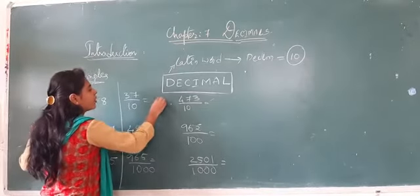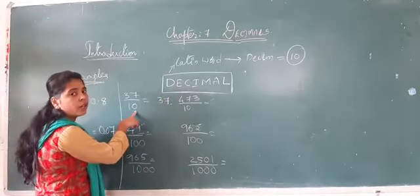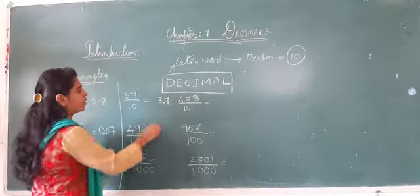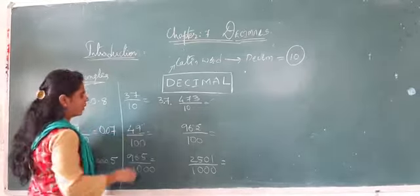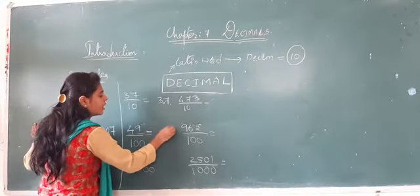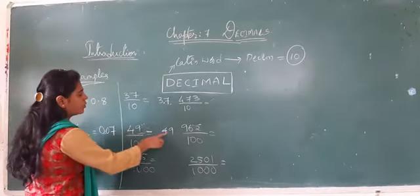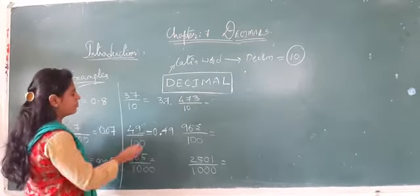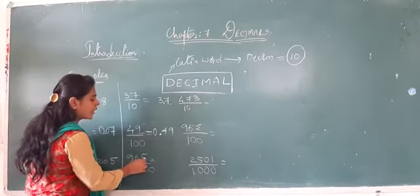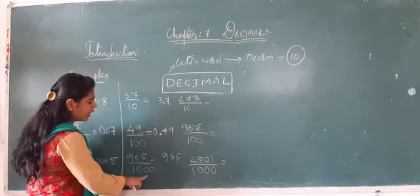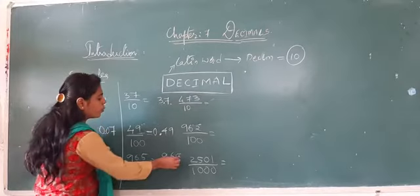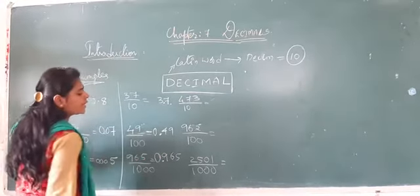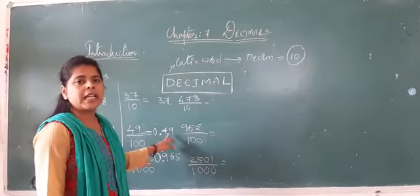For 37 by 10: write 37 as is, one zero in the denominator means one decimal place — so it is 3.7. For 49 by 100: two zeros, so two decimal places — giving 0.49. For 965 by 1000: write 965 as is, three zeros means three decimal places — so it is 0.965. After the decimal, you should read as numbers. Decimal place values are important and must not be ignored.